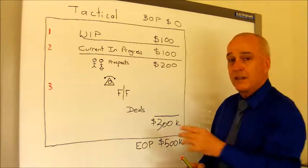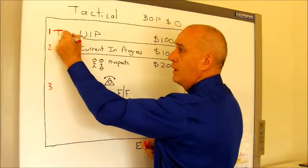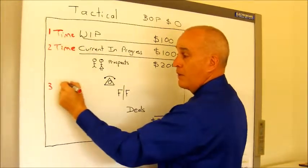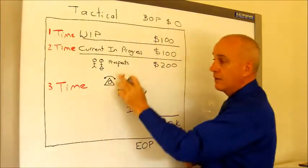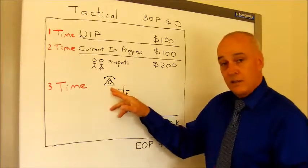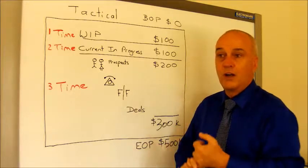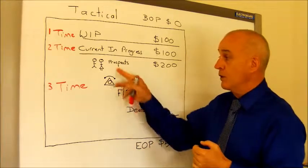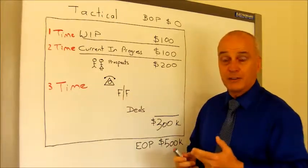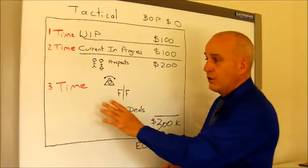One more thing that needs to be considered before you implement this is the time that it's going to take. All of these elements have an amount of time they take to identify the prospects, build the database, do the mail-outs, make the telephone calls. How many can you physically accomplish in a week? Can you do five or ten phone calls in an hour when you're contacting your prospects to follow up your mail-outs? How many face-to-face meetings is it going to take you to convert clients or to get deals presented to them? All of this takes time.